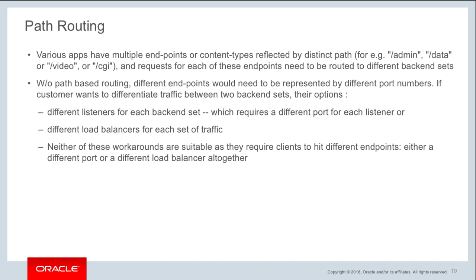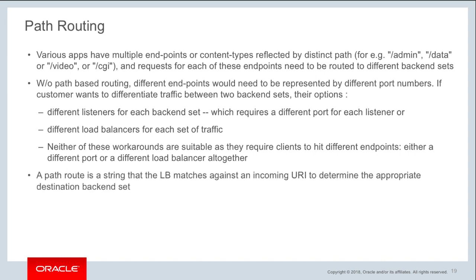However, both workarounds are unsuitable because they require clients to hit different endpoints — either a different port in case of a listener, or a different load balancer. The best approach for this use case is to use a path route. A path route is a string that the load balancer matches against an incoming URL to determine which particular backend set is appropriate and where to route that traffic.